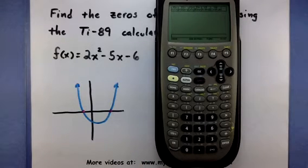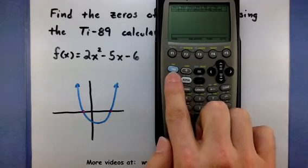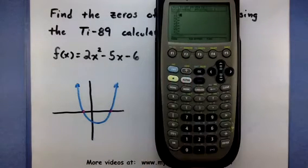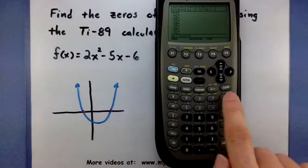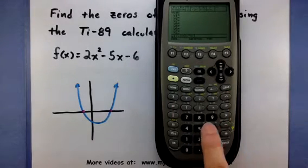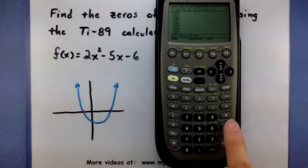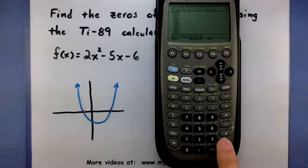Alright, so the first thing I need to do is get this function into the calculator. So I'm going to go to my y equals screen by pressing the green button and then f1. So let's enter it in. 2x squared minus 5x minus 6. Enter.